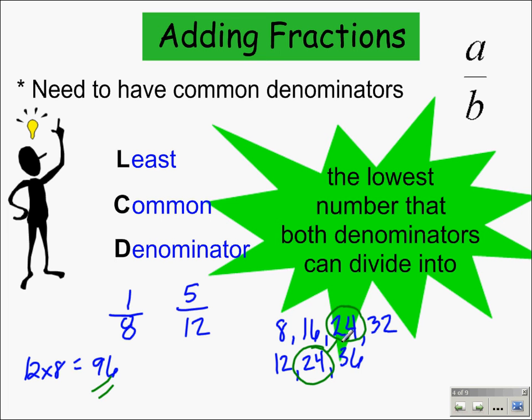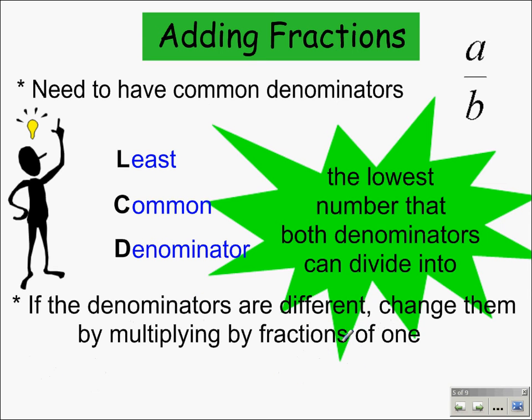Once we find that least common denominator, we've got to change them by fractions of 1. What do I mean by fractions of 1? Well, 3/3 is equal to 1, 2/2 is equal to 1, 10/10. When we multiply anything by 1, it does not change the fraction, because multiplying something by 1 is identifying it. So we want to use our fractions of 1 to change it.